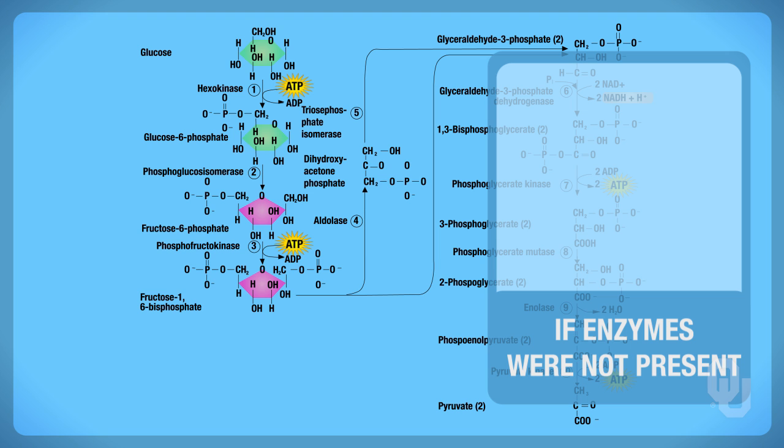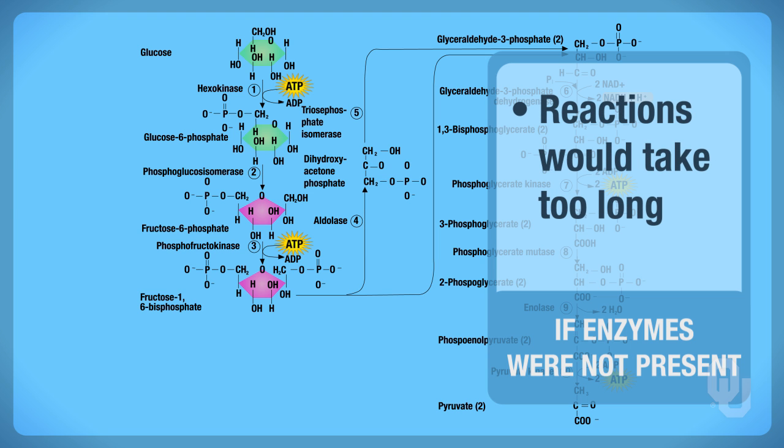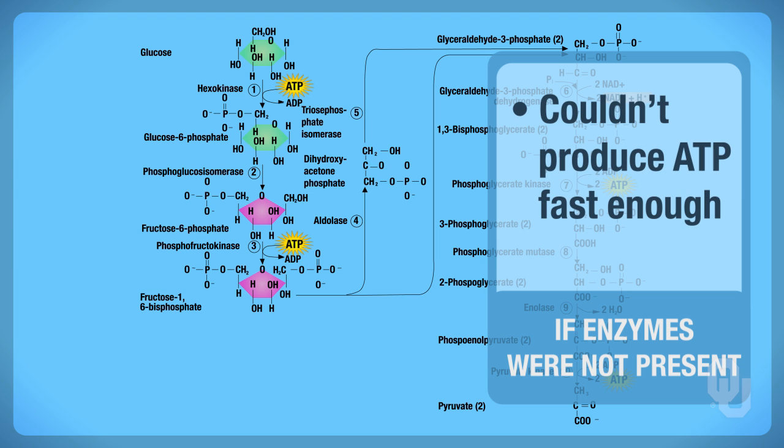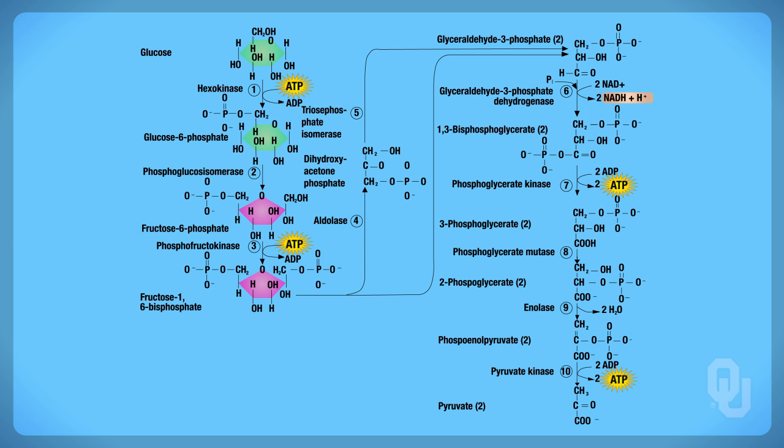If enzymes were not present, these reactions would take forever to actually take place. We wouldn't be able to make ATP fast enough if we were talking about glucose metabolism. You wouldn't make ATP fast enough in order to survive, so your cells would actually end up dying because you lack the enzymes to actually do glucose metabolism. The enzymes are vital. I chose an example of glucose metabolism since we spent the last week discussing it. Enzymes are vital. They catalyze reactions.